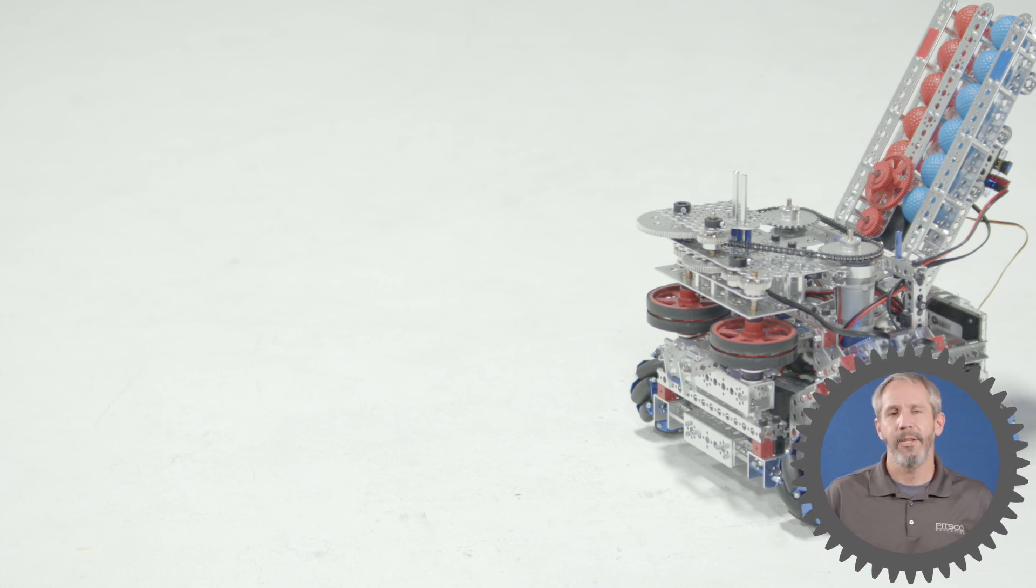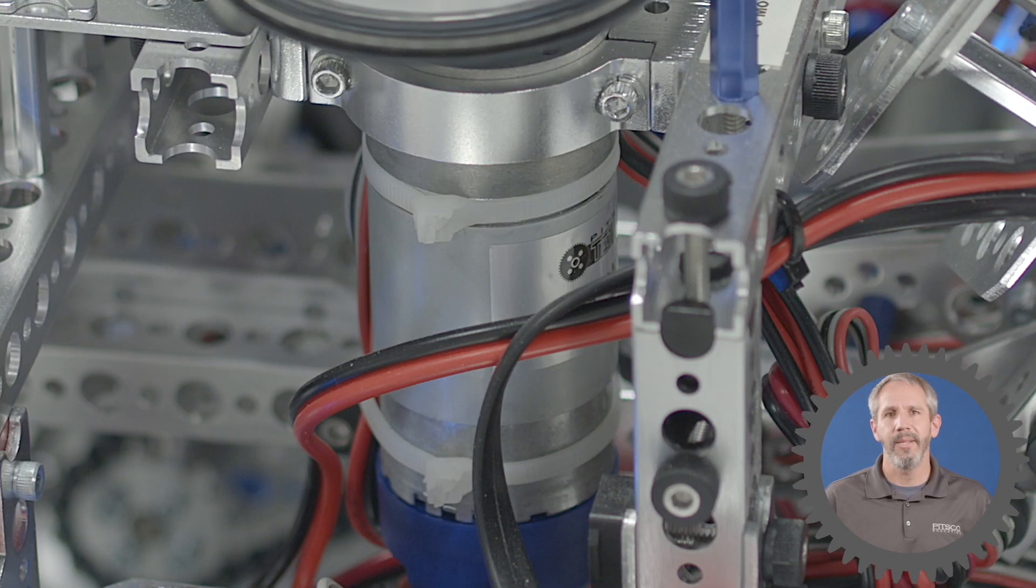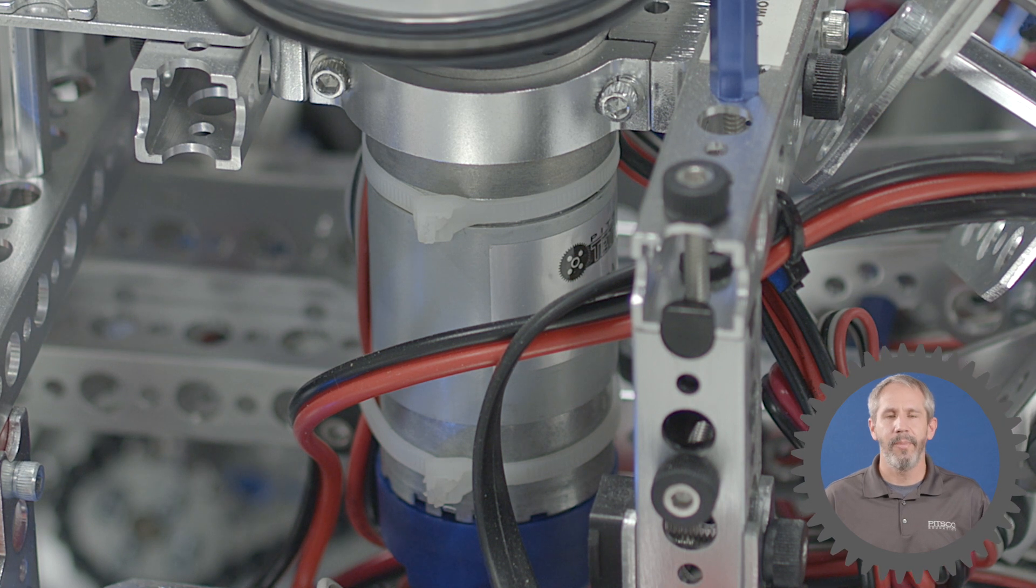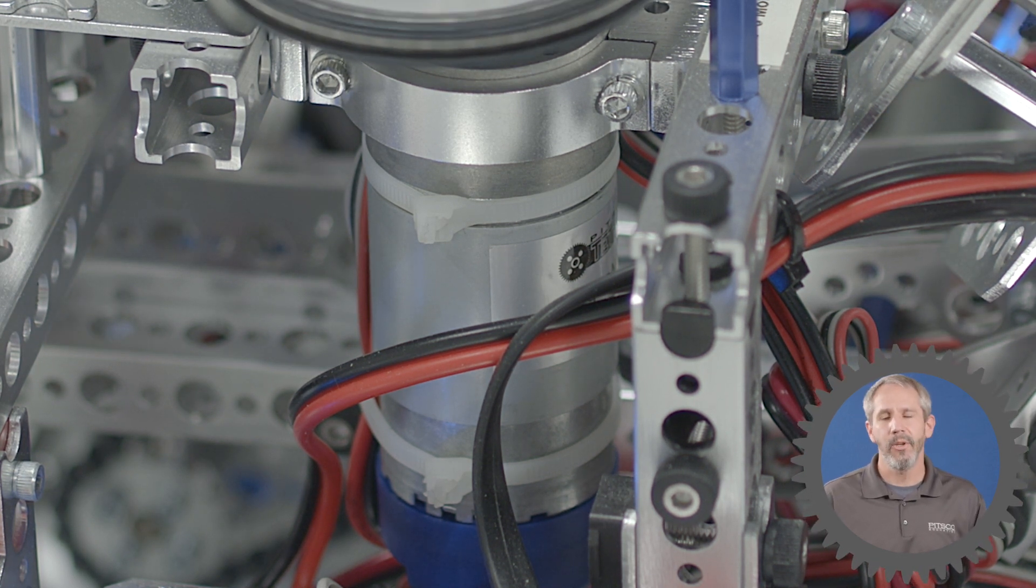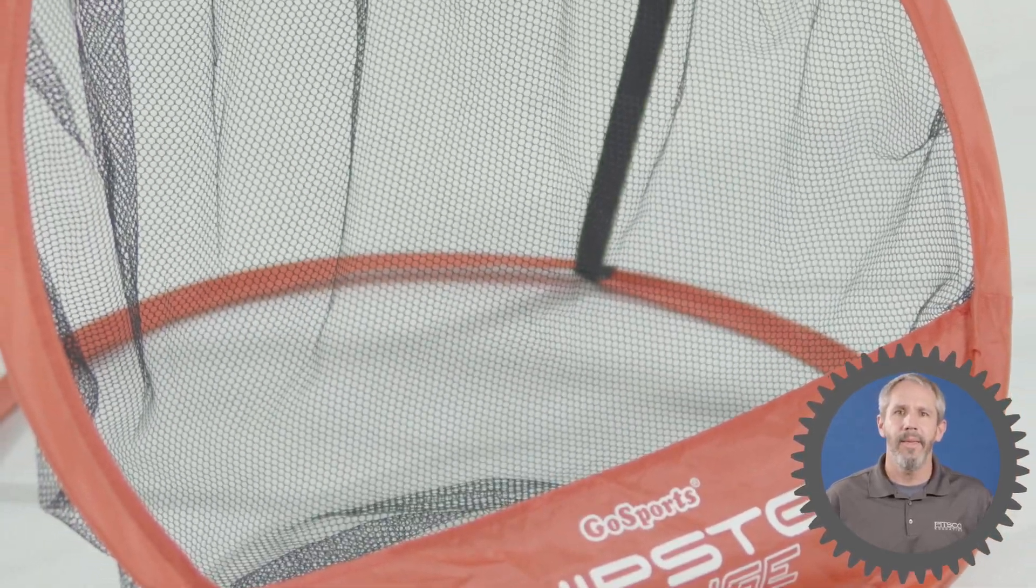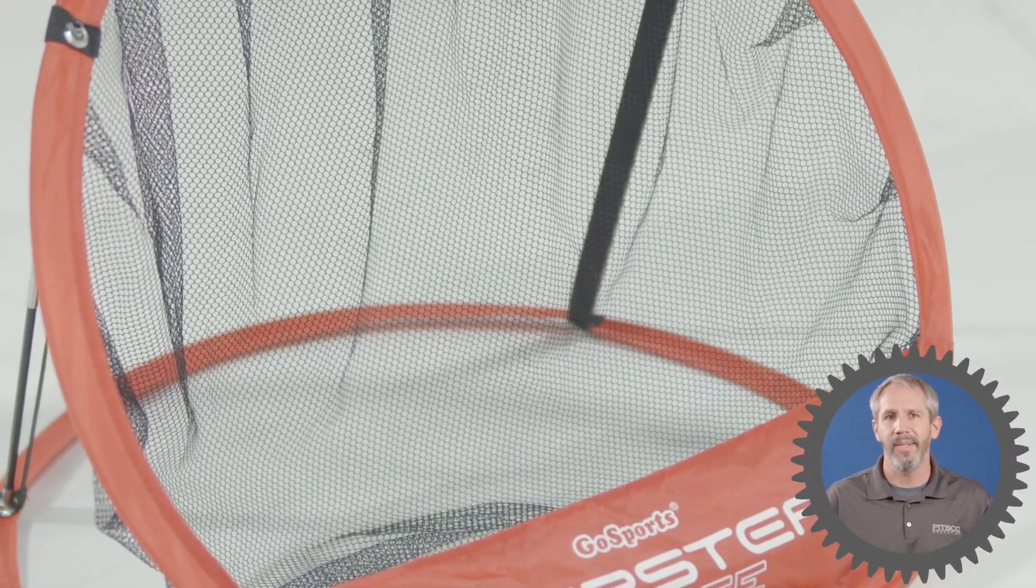There are several other advantages to using a flywheel system like this. One is that you can adjust the speed of the motors to adjust the distance that you're shooting your elements, so if your targets are further away or closer, then you can adjust those motors to compensate.